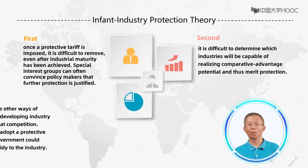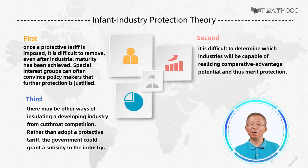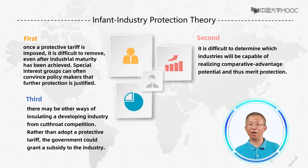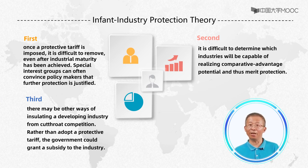Once the various protections are imposed, it may be difficult to remove them. Third, there may be other ways of insulating a developing industry from cut-throat competition rather than adopting a protective tariff. The government could grant a subsidy to the industry. A subsidy has the advantage of not distorting domestic consumption and relative prices. Its downside is that instead of generating revenue as an import tariff does, a subsidy spends revenue.